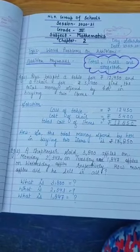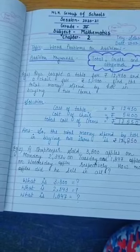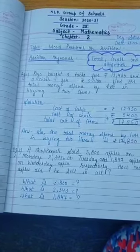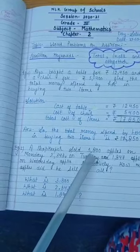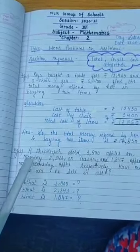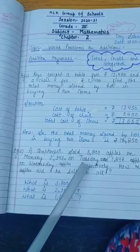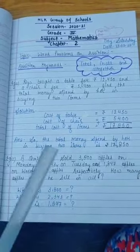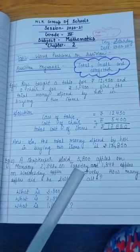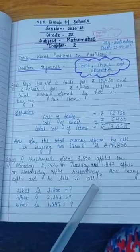Now we will solve one more addition problem. Let's look at example number 2. A shopkeeper sold 3,800 apples on Monday, 2,343 apples on Tuesday, and 1,847 apples on Wednesday. How many apples did he sell in all?